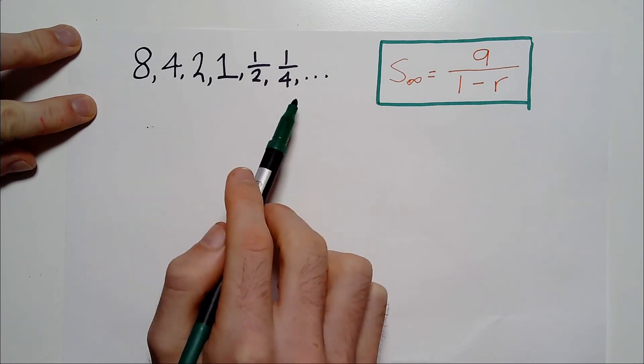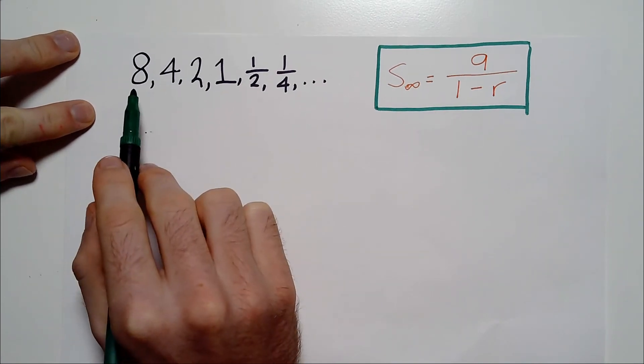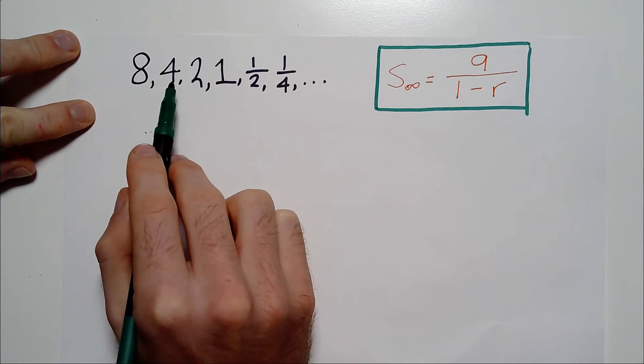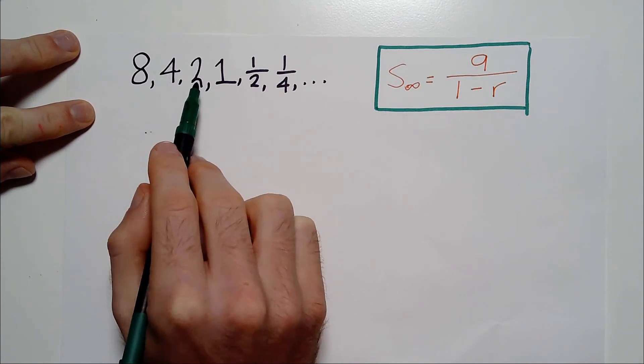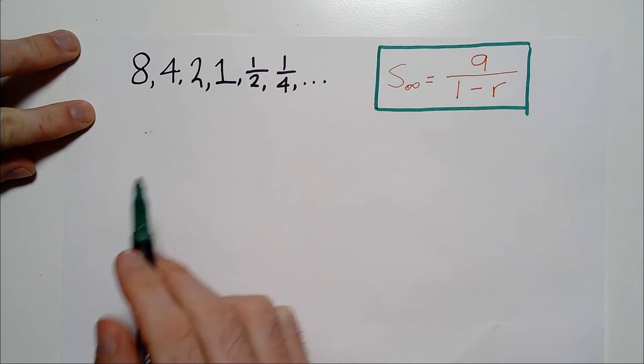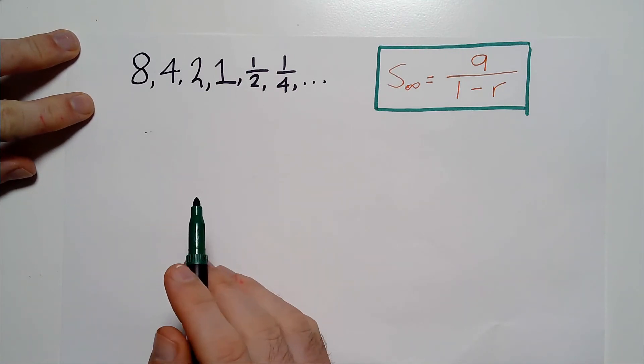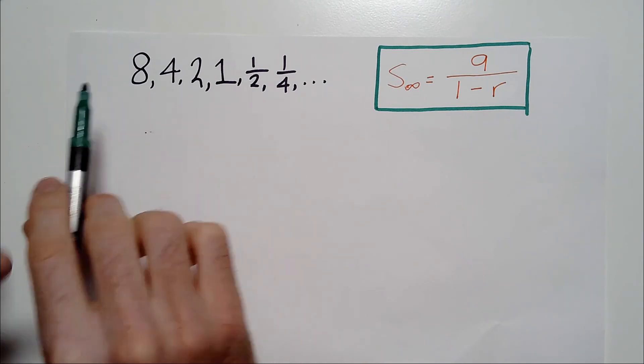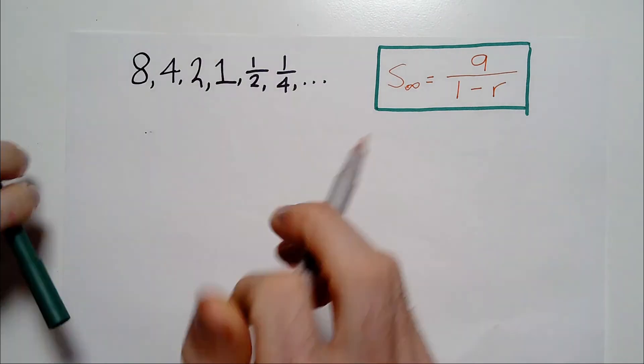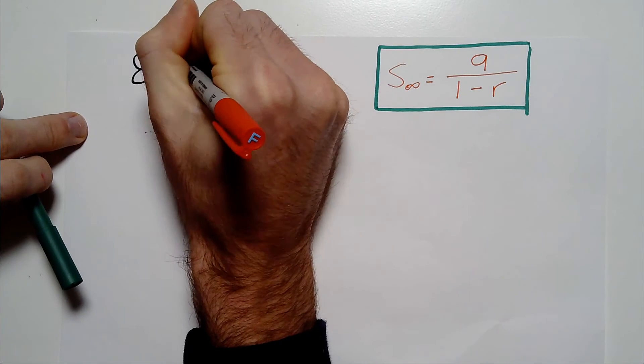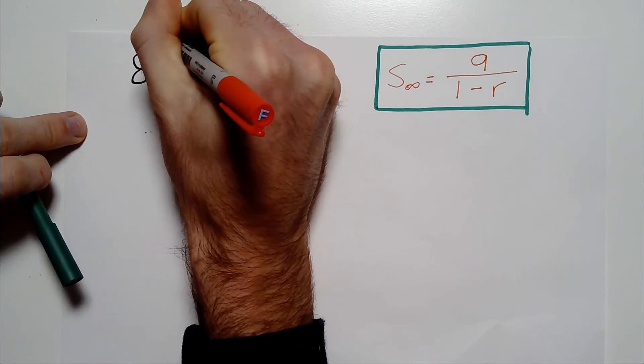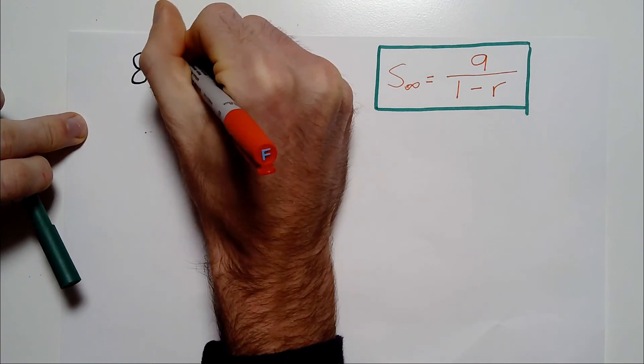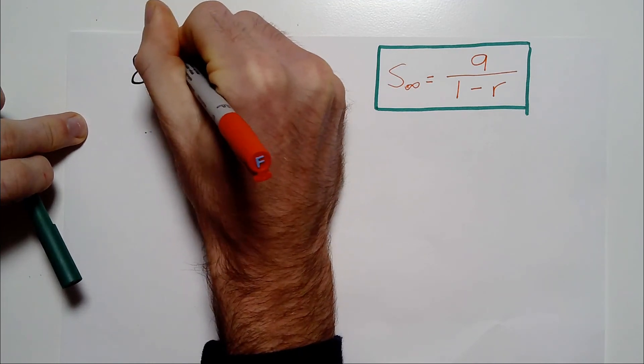There's a pattern like this whereby to get from the first term to the second term, to get from 8 to 4, and then from the second term to the third term, from 4 to 2, and so on, we are multiplying by the same number, including a fraction. So in this case, how do we get from 8 to 4? Well, we multiply it by a half. And to get from 4 to 2, we multiply again by a half.